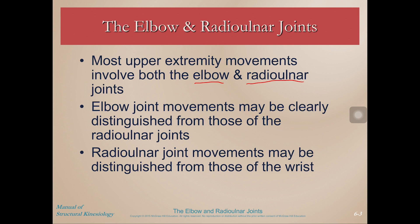However, we can distinguish between movements of the elbow and radial ulnar joints, and we can also distinguish between radial ulnar joint movements and those of the wrist — which we'll cover in a couple of videos. Just know that any joint movements we do in the upper extremity are a combination of multiple movements from multiple joints.